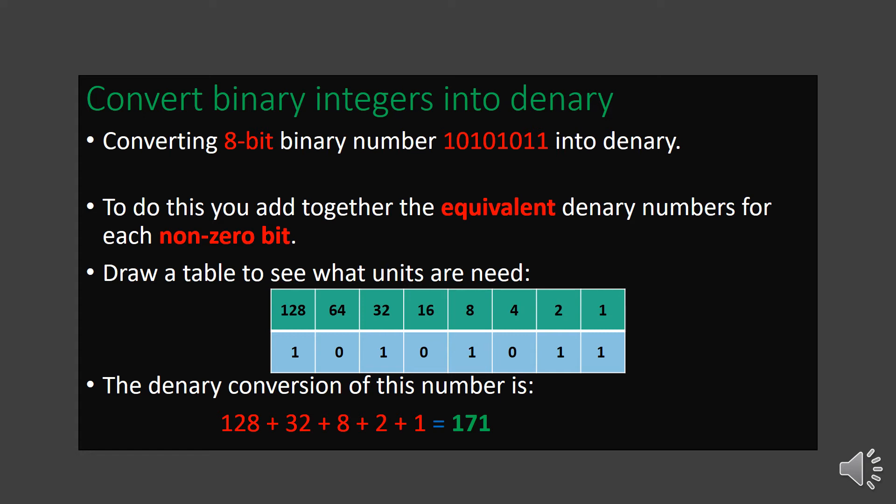Now we will see how to convert binary integers into decimal. We are going to convert an 8-bit binary number into decimal. We draw the same table with 8 boxes: the first row contains the powers of 2 — 1, 2, 4, 8, 16, 32, 64, 128 — and in the lower row we write the given binary number to be converted. We then add up the values wherever 1s appear, that is, the equivalent decimal values for each non-zero bit.